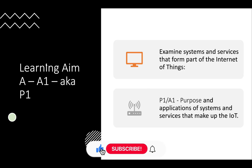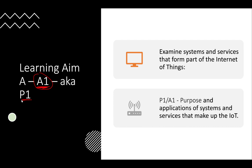Welcome back. We're looking at Learning Aim A, specifically A1, which is also linked directly to P1. A1 is what you'll find on the specification and P1 is what you'll find on the assignment brief - they cover exactly the same things, with some possible crossover into A2. P1 requires you to examine systems and services that form part of the Internet of Things.